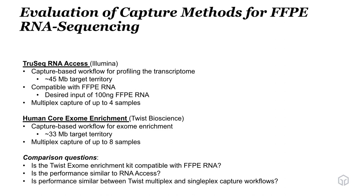We wanted to compare the performance of the TWIST exome enrichment to the RNA Access — now called RNA Exome from Illumina. The TrueSeq RNA Access kit is a capture-based workflow for profiling the transcriptome with a target territory of about 400 megabases, compatible with FFPE, with a desired input of about 100 nanograms and multiplex capture of up to four samples. The human core exome enrichment from TWIST is also a capture-based workflow with a target territory of about 33 megabases, designed as a multiplex capture of up to eight samples. Our comparison questions were: is the TWIST exome enrichment kit compatible with FFPE RNA? Is performance similar to RNA Access? And how does multiplex compare to singleplex for TWIST?